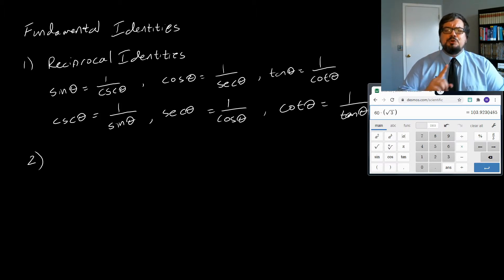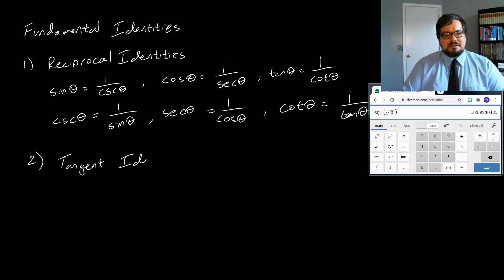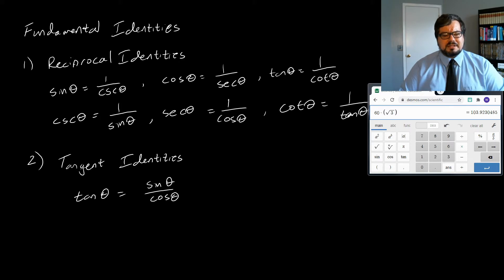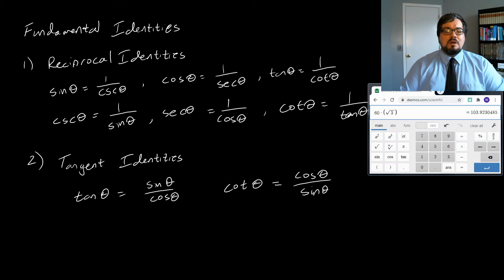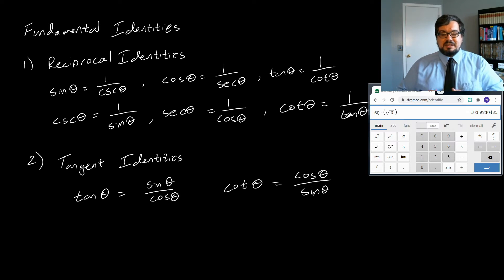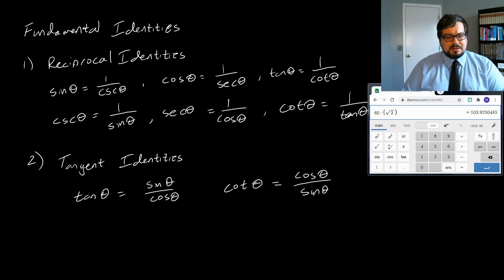Second, we have the tangent identities. Tangent of theta is equal to sine of theta over cosine theta, and cotangent is equal to cosine of theta over sine of theta. Once we know the tangent identity for tangent, the one for cotangent is immediate because cotangent is the reciprocal of tangent. But we do need to understand why tangent of an angle equals sine of that angle over cosine of that angle — we'll see that quickly.